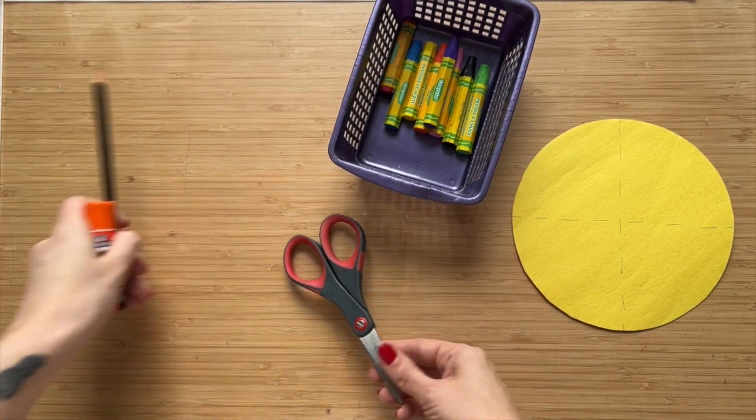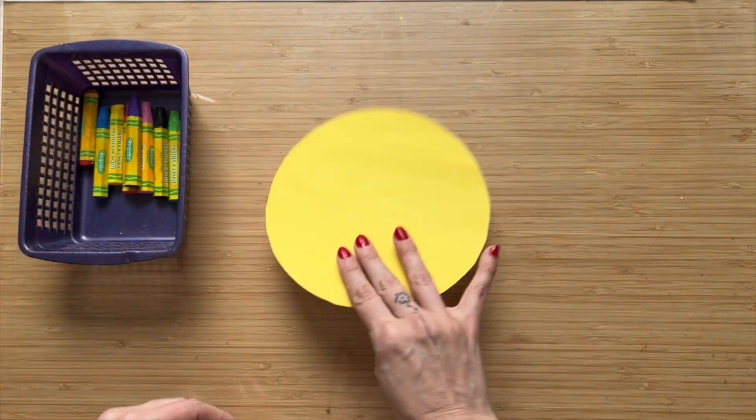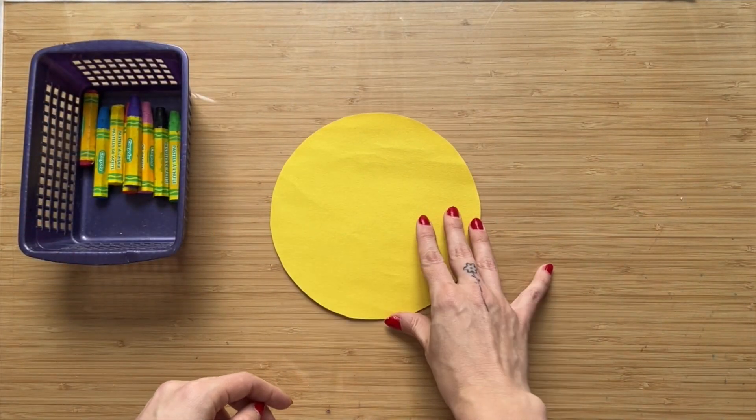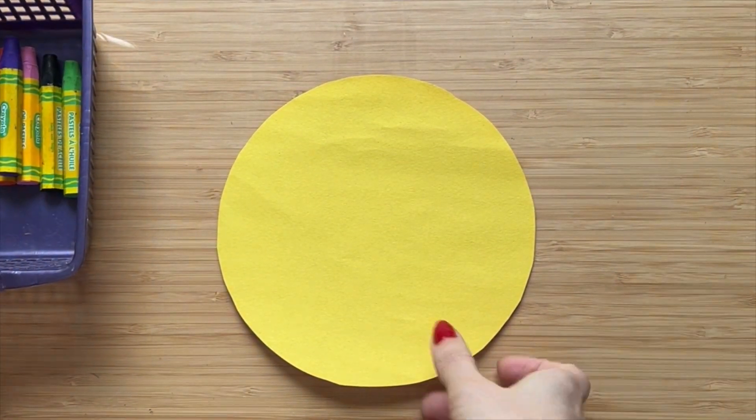You can put all of those to the side, except for your oil pastels and your circle. You're going to make sure to flip it over so that those lines are on the back.